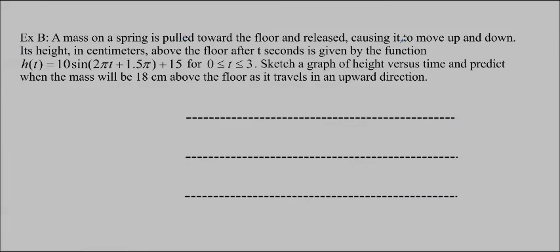So here's a word problem to try, but it's going to be really similar. A mass on a spring is pulled toward the floor and released, causing it to move up and down. Its height in centimeters above the floor after t seconds is given by the function h of t equals 10 sine 2 pi t plus 1.5 pi plus 15. So we want to sketch a graph of height versus time and predict when the mass will be 18 centimeters above the floor as it travels in an upward direction. Okay, so let's get started. First of all, we'll notice that this is not factored, and we want it to be in factored form. So we'll do that first, which is probably a relief because there's a pi in there and we don't like pies.